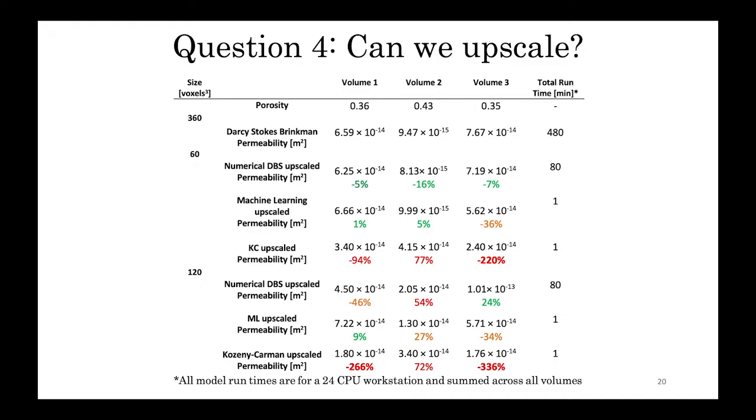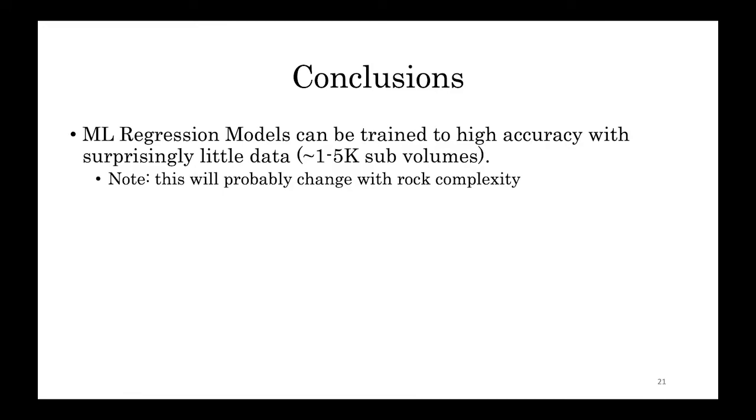Additionally, it looks like both the numerical upscaling and the machine learning regression model had about the same accuracy. However, the machine learning model was around 80 times faster. Furthermore, we can see that the 60-cube models had slightly better results than the 120-cube models. It is not clear exactly why that is, but it's a topic of future work.